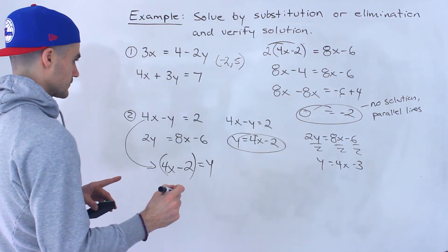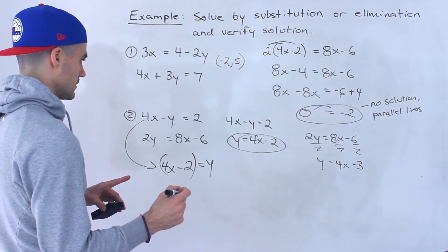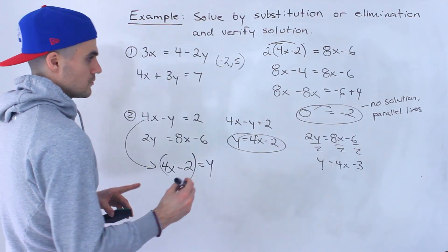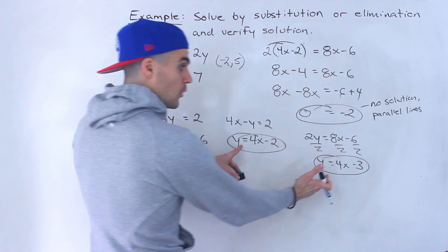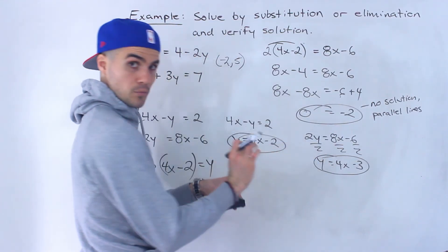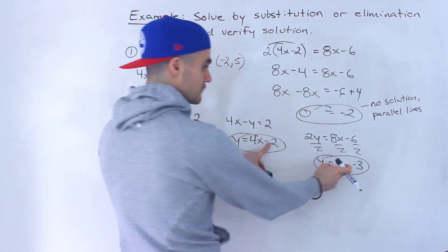It would be 4x minus 3. So notice that both of these lines have the same slope, a slope of 4, but they have a different b value.